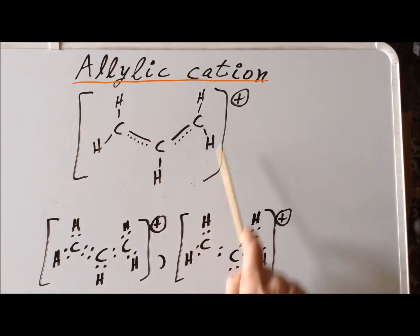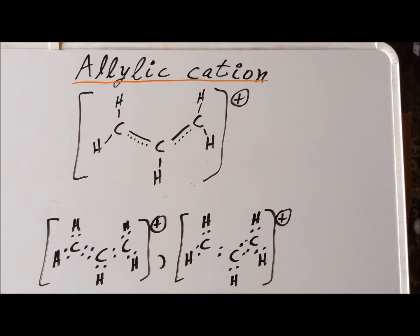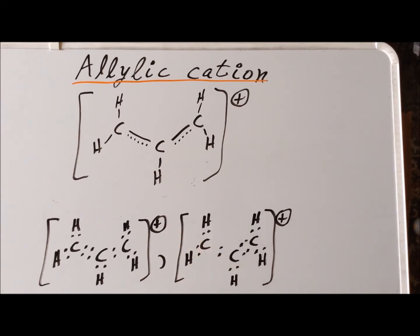And because of resonance, we imagine that this particular cation will be particularly stabilized — more than it would be as a simple primary cation. As we've drawn it here, with a positive charge on the left-hand carbon, that would be a primary cation. But the allyl cation is resonance stabilized, so it is more stable than a primary cation, and therefore more likely to form — it will form more quickly in solution.